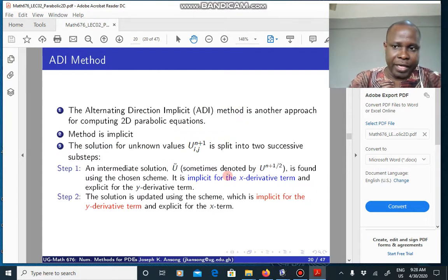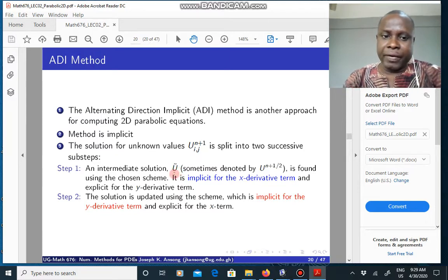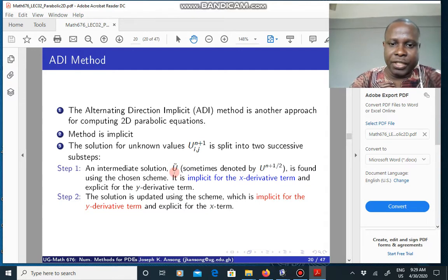In the previous lecture, we looked at the approximate factorization approach to solving a 2D parabolic equation. The ADI method is, of course, an implicit method. The approach is very similar to the approximate factorization approach in that you split your computation into two steps. The solution for the unknowns is split into two steps such that in the first step, you solve for some preliminary solution or intermediate solution, U tilde, sometimes denoted as U to the n plus 1 half.